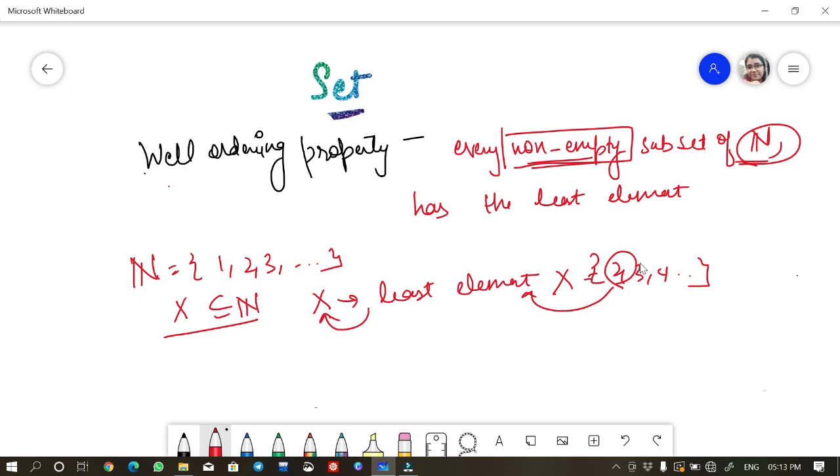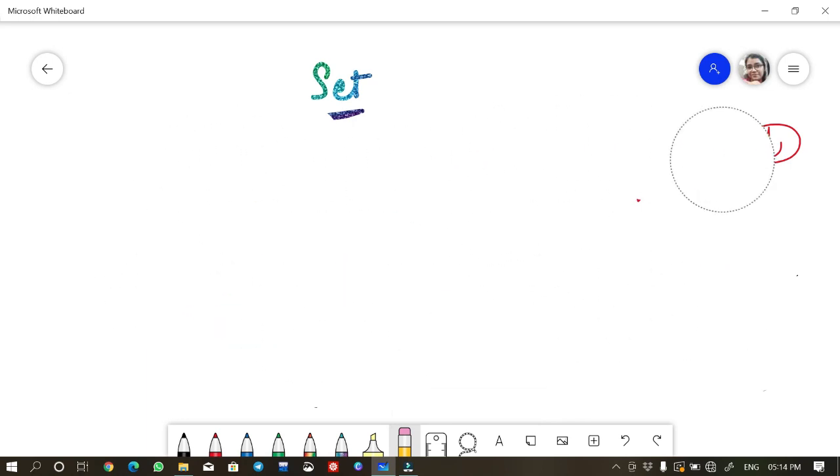The next up we have is the Russell paradox. Russell paradox is something, by paradox you mean that there is a contradiction. If you take A, you will end up having a contradiction and hence A is not correct. So this is just an example.